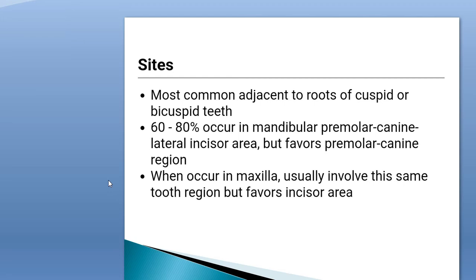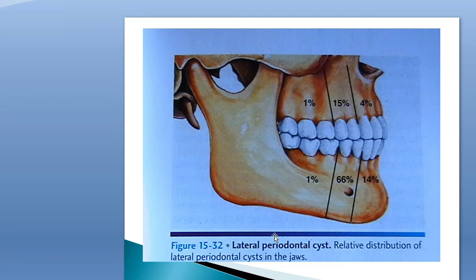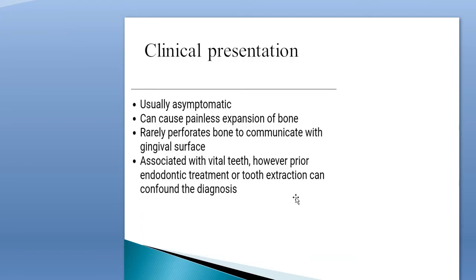Regarding the site: it most commonly occurs adjacent to the roots of cuspid or bicuspid teeth. 60 to 80% occur in the mandibular premolar, canine, and lateral incisor area, but it favors the premolar and canine region the most. When occurring in the maxilla, it usually involves the same tooth region but favors the incisor area. There is 66% site predilection in the mandibular bicuspid area, followed by maxillary bicuspid area, then anterior mandibular region, then anterior maxillary region, and less than 1% in the posterior regions of the maxilla and mandible.